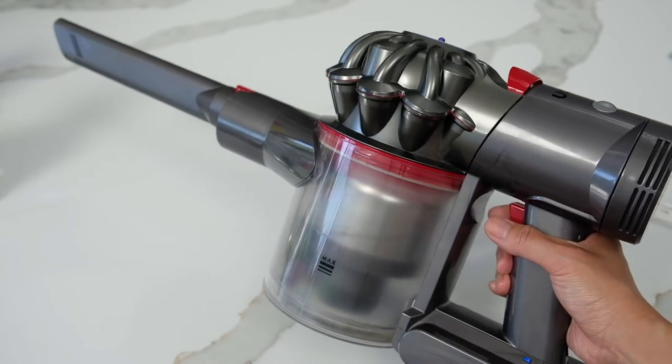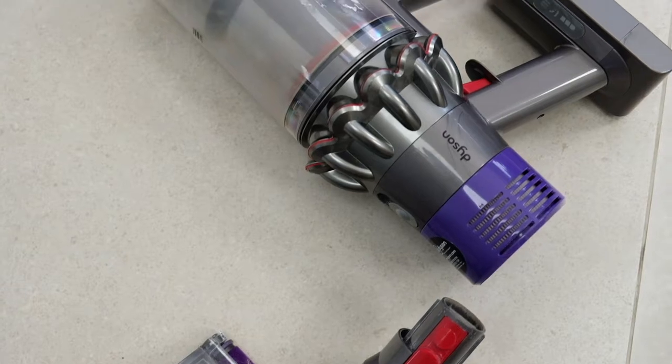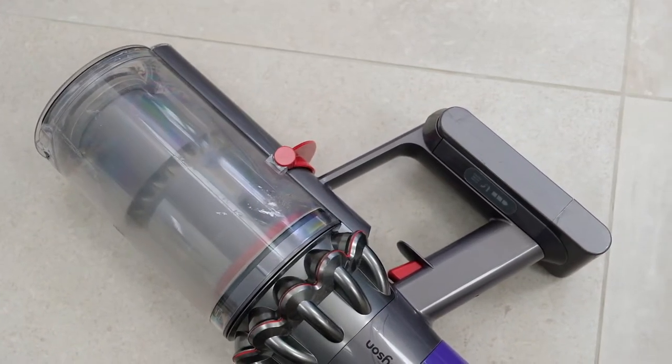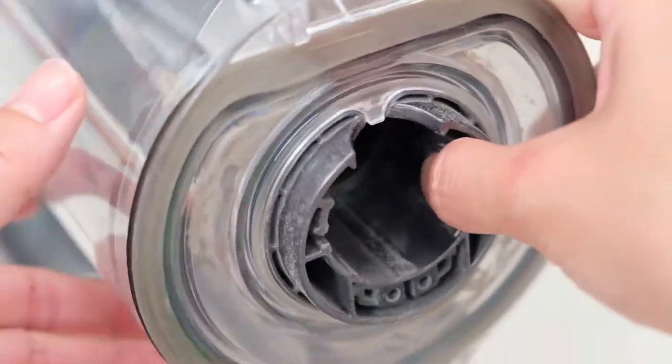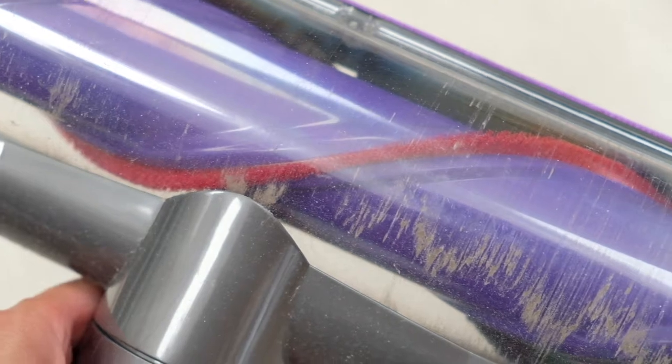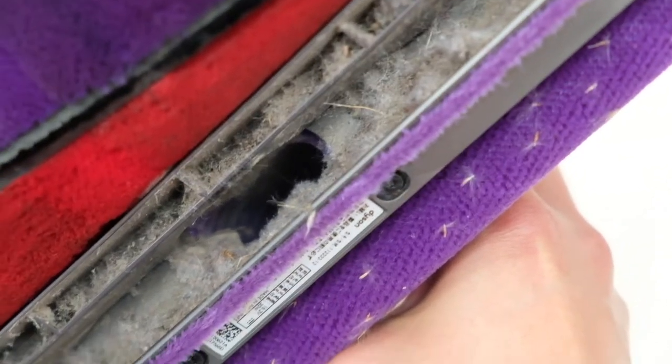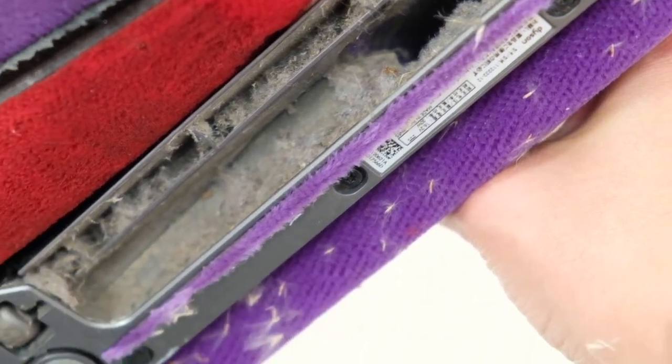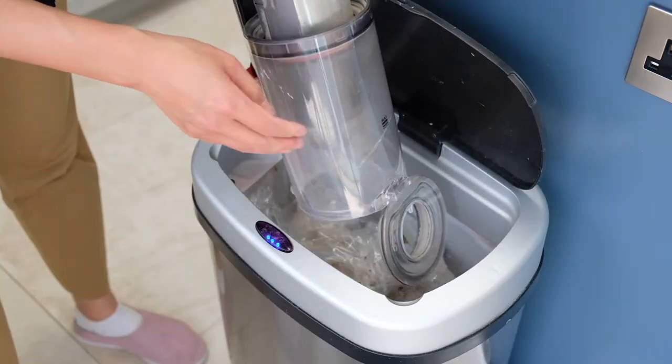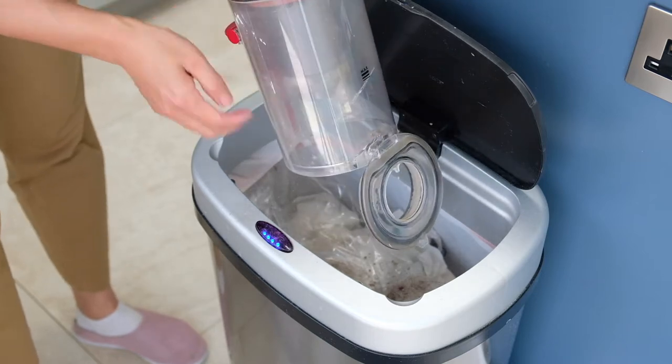I haven't cleaned this Dyson since we bought it, which was a year ago. All parts have become dirty: the main body of the machine including the cyclone and the bin, the soft roller head, and the direct driver head. It's better to clean this before things are clogged up, which will significantly impact the performance of your Dyson. First of all, I'm emptying the bin before taking it apart to avoid unnecessary dust dropping on the floor.